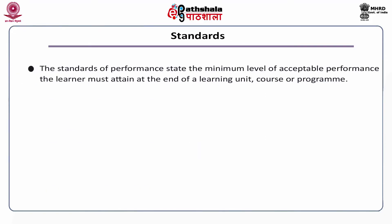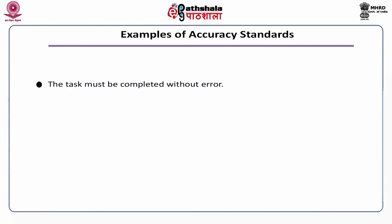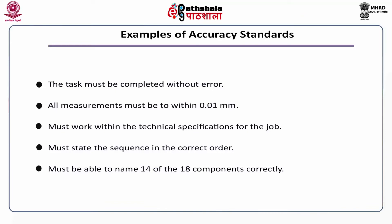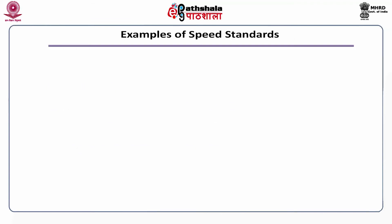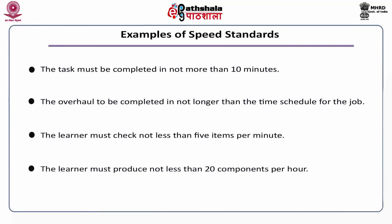Standards: the standards of performance state the minimum level of acceptable performance the learner must attain at the end of a learning unit, course or program. Generally speaking, there are two types of standard: accuracy and speed. Examples of accuracy standards: the task must be completed without error; all measurements must be within 0.01 millimeter; must work within the technical specification for the job; must state the sequence in the correct order; must be able to name 14 of the 18 components correctly with not more than 3 errors. Examples of speed standards: the task must be completed in not more than 10 minutes; the overhaul to be completed in not longer than the time schedule for the job; the learner must check not less than 5 items per minute; the learner must produce not less than 20 components per hour.